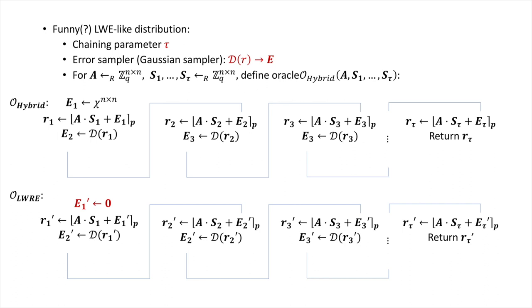To see this, we define another oracle called the LWRE oracle that works exactly the same as the hybrid oracle, with the only difference being that the first noise matrix E1 is set to the zero matrix. So in the first chain, the oracle computes A times S1 plus zero and derives a seed for E2 by rounding this result down. Everything else stays the same.